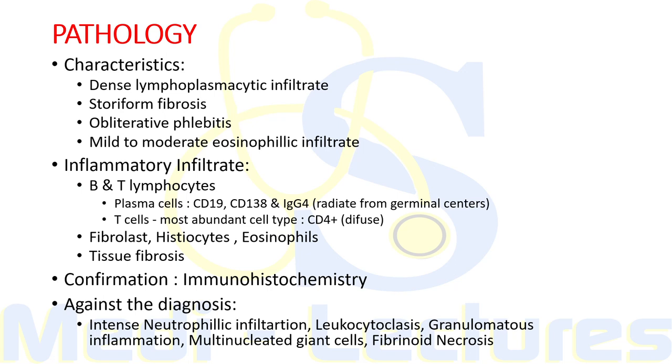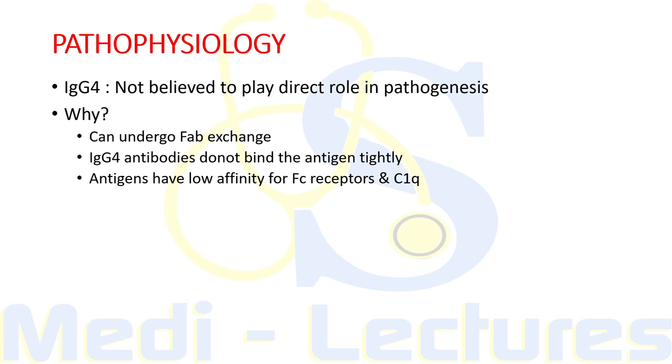The histopathologic characteristics include a dense lymphoplasmacytic infiltrate with mild to moderate eosinophilic infiltrate. The cellular inflammation is often encased in a distinct fibrosis pattern known as storiform fibrosis — typically a basket-weaving pattern. The pathophysiology is surprising because despite the emphasis of IgG4 in the name of this disease, it is not believed to play a direct role in pathogenesis, because IgG4 can undergo Fab exchange.